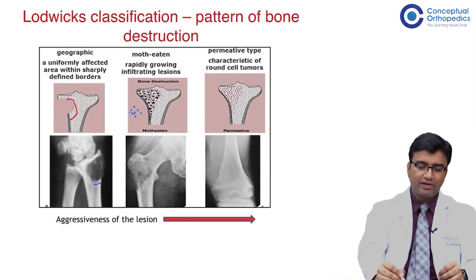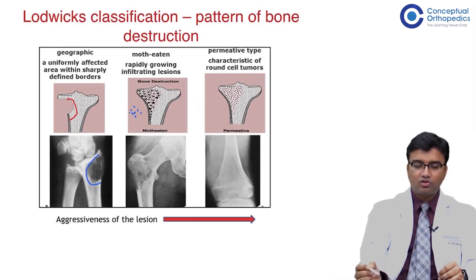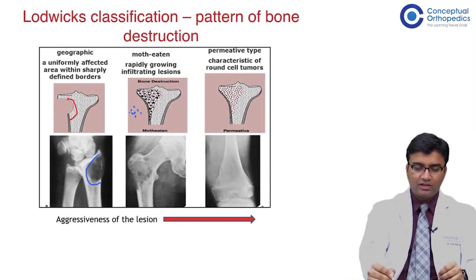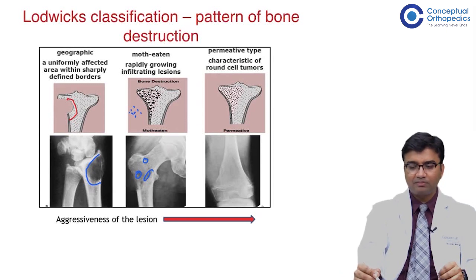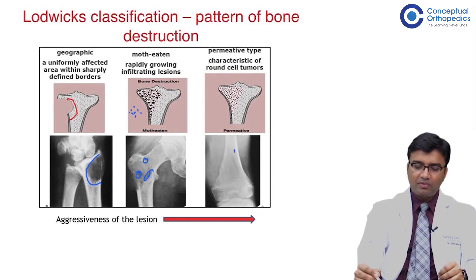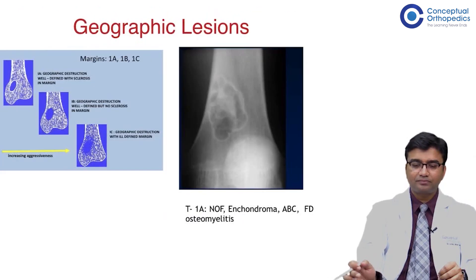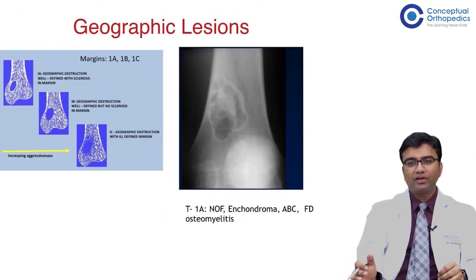On X-rays, you can identify them: a geographic type has well-defined boundaries with punched-out lesions, and the permeative type shows a completely destructive type of lesion.